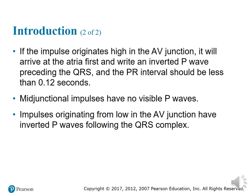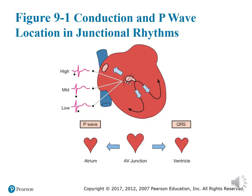If the impulse originates high in the AV junction, the resulting beat will have an inverted P wave preceding the QRS and the PR interval should be less than 0.12 seconds. If the impulse originates midway in the AV junction, the impulses will reach the atrium and the ventricles simultaneously. Because both are the same distance from the AV junction, the P wave will be swallowed up by the QRS — mid-junctional impulses have no visible P waves.